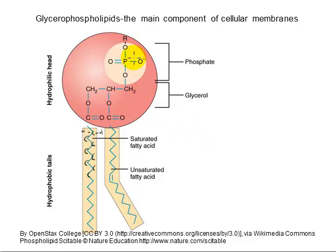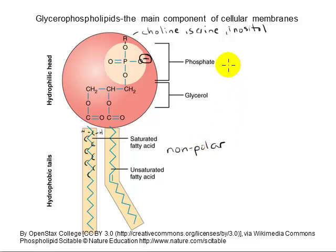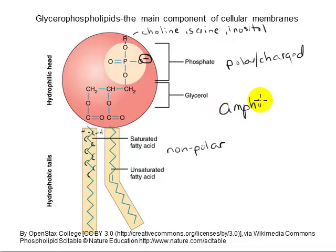Here's where we see a significant difference. The third carbon is bonded to a phosphate functional group, which is negatively charged, and this phosphate in turn is bonded to another group that can vary — commonly choline, serine, or inositol. This group, symbolized by the letter R, is going to be a polar or charged ionic group of atoms. This structural difference has important consequences: one end of the molecule is made up of hydrocarbon tails that water doesn't readily interact with — hydrophobic — and on the other side we've got charge and polarity, which is hydrophilic. This lends a dual nature to the molecule; we call this being amphipathic. Phospholipids are commonly drawn with a hydrophilic head group and two hydrophobic fatty acid tails.